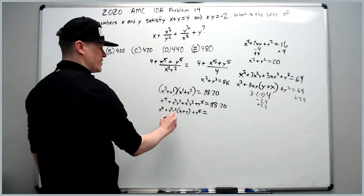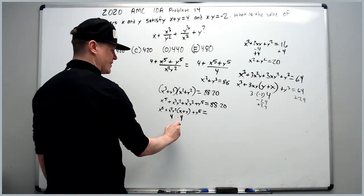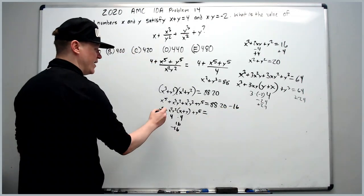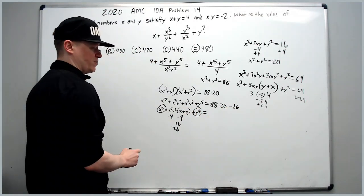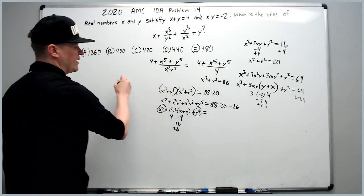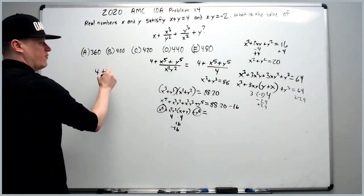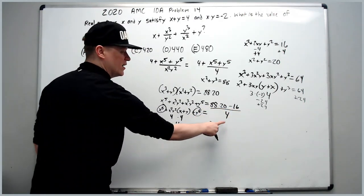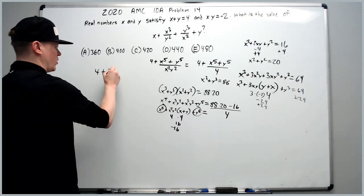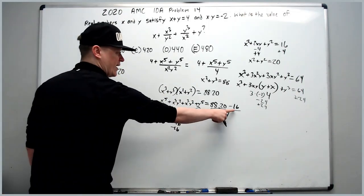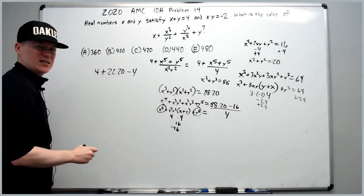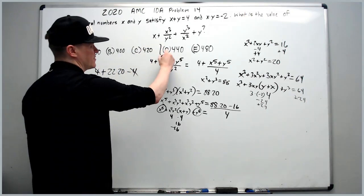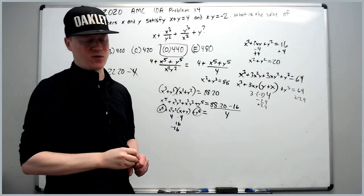Since x squared y squared is 4 and x plus y is 4, that's 16. Subtracting 16 from both sides gives x to the fifth plus y to the fifth equals 1744. Placing this back in and dividing by 4, I put the 4 into 88 times 20 to get 22 times 20 and into 16 to get minus 4. Canceling gives 4 plus (440 minus 4) divided by... simplifying, 2 times 22 is 44, tack on the 0: the answer is 440.